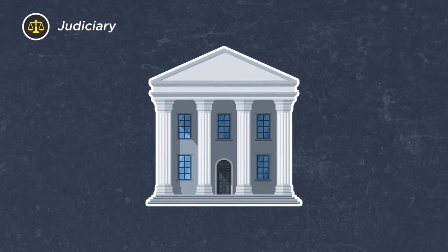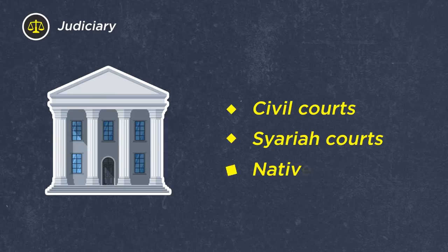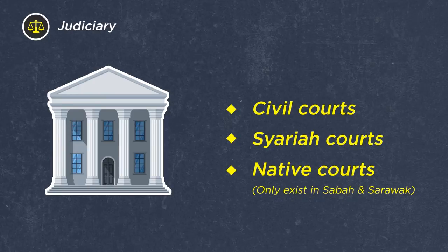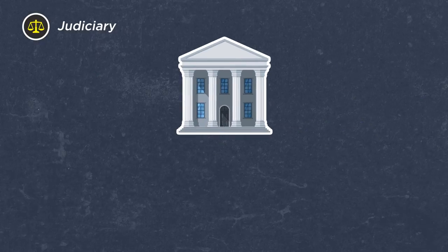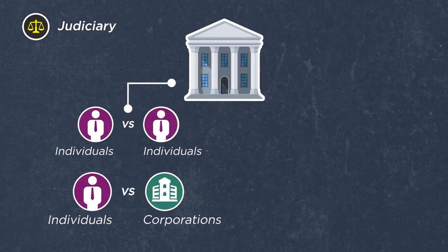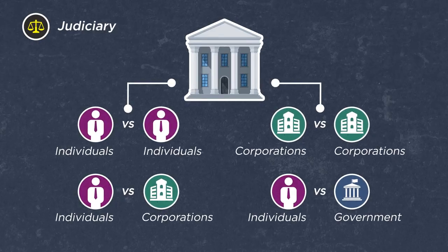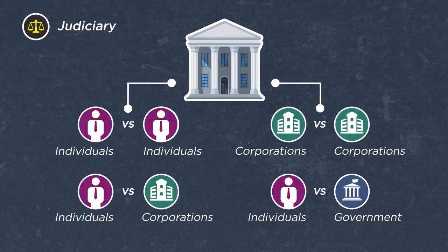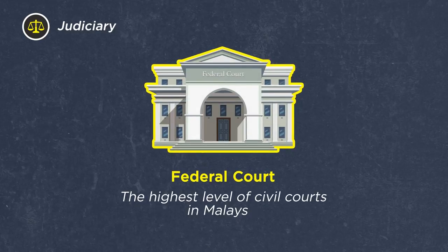As for the judiciary, the several types of courts in Malaysia include the Civil Courts, the Sharia Courts, and the Native Courts, of which the latter only exists in the states of Sabah and Sarawak. These courts resolve legal disputes, including but not limited to those between individuals and/or corporations, as well as between individuals and the government. However, the sole arbiter over the constitutional division of powers is the Federal Court, the highest level of civil courts in Malaysia.